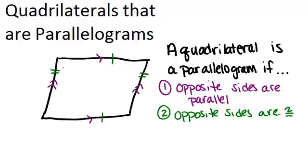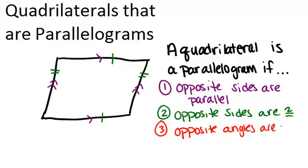The third way to tell that a quadrilateral is a parallelogram is if opposite angles are congruent. It has to be both pairs of opposite angles being congruent — so this angle would be congruent to this angle, and this angle is congruent to this angle. If that's true, even if you don't know anything else, that quadrilateral is a parallelogram, and so it will have all the other properties of a parallelogram.